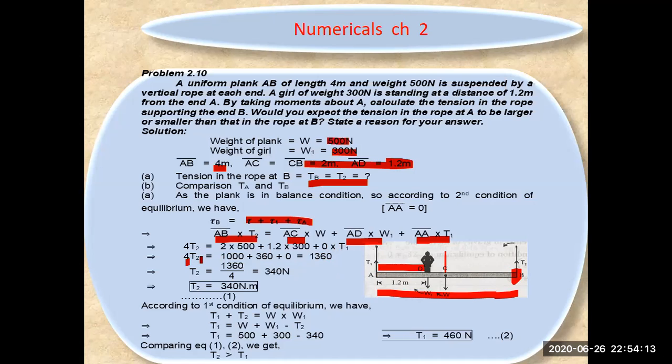Looking at the total values, this becomes 4T2 equals 1360, giving us T2 equals 340 Newtons, the tension at B.